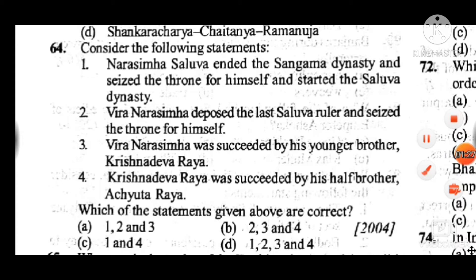Question 64: Consider the following statements — answer is D: all statements are correct. One: Narasimha Saluva ended the Sangama dynasty and seized the throne for himself, starting the Saluva dynasty. Two: Veera Narasimha deposed the last Saluva ruler and seized the throne for himself. Three: Veera Narasimha was succeeded by his younger brother Krishnadevaraya. Four: Krishnadevaraya was succeeded by his half-brother Achyutaraya. All four statements are correct.